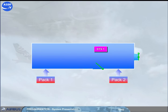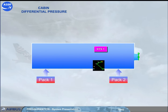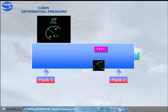Let us look at the operation of the outflow valve for an aircraft in cruise, and what happens to cabin differential pressure, cabin altitude, and cabin vertical speed. We will start with cabin differential pressure. If the outflow valve is closed, or only allowing a small amount of air to escape, then the cabin differential pressure will increase.